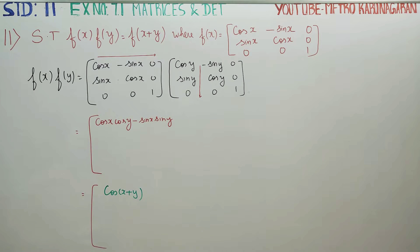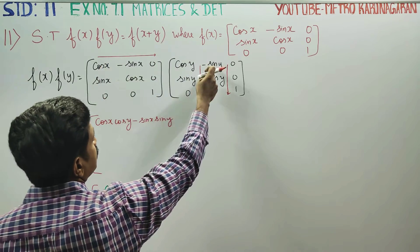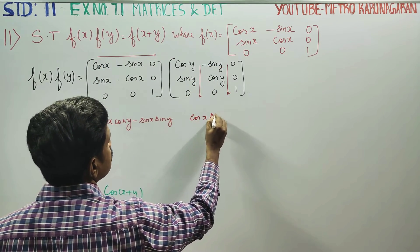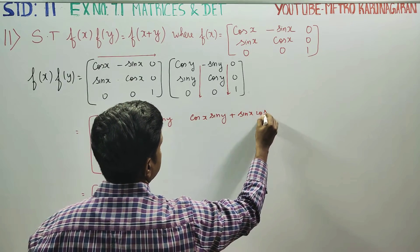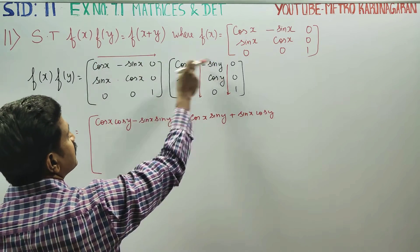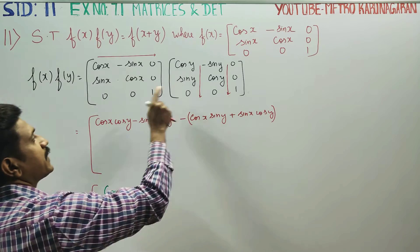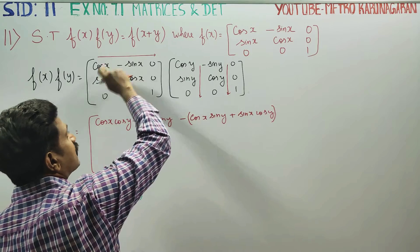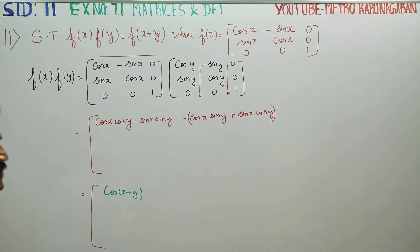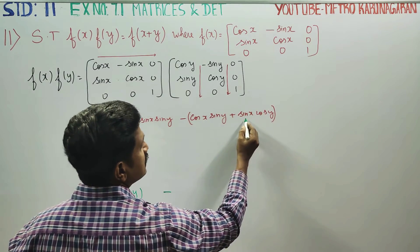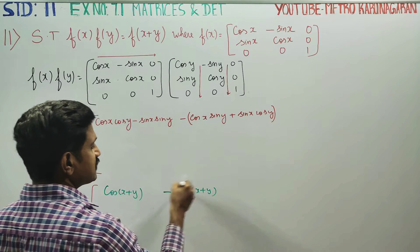So cos a·cos b minus sin a·sin b gives cos(a+b). For the next element: cos x into sin y, minus sin x into cos y. The formula sin a·cos b plus cos a·sin b is the sin(a+b) formula, so this element becomes minus sin(x+y).